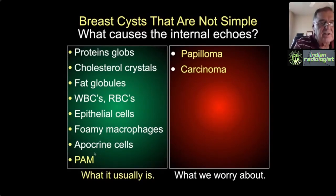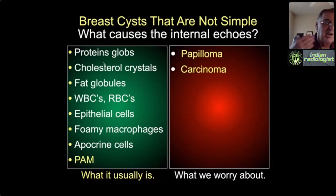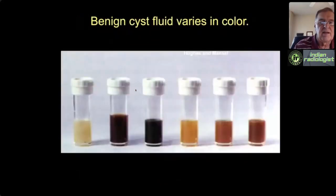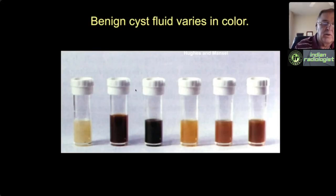A pathologist can describe all these things inside cysts, but in their impression they say 'benign fibrocystic change'—they don't get brain damage from all of this. What I want to talk about is how we as radiologists can do a better job distinguishing the benign things from the suspicious things.